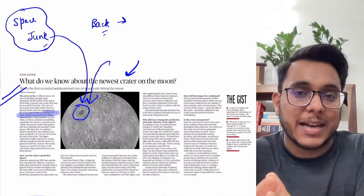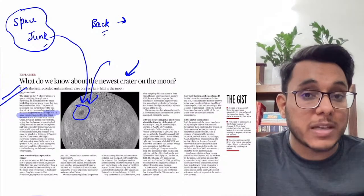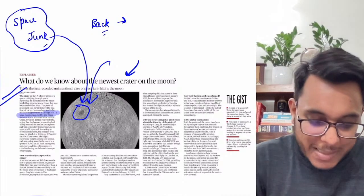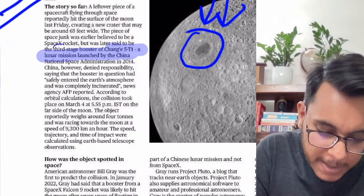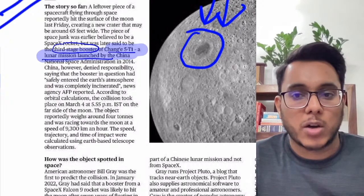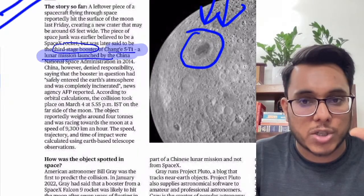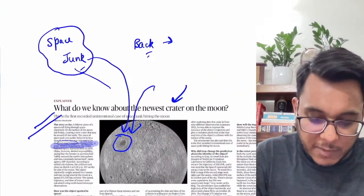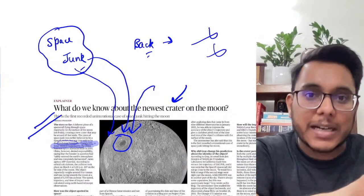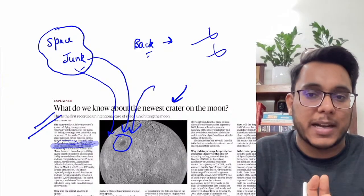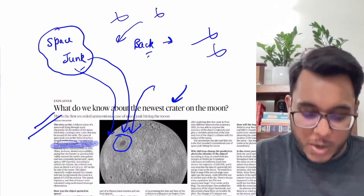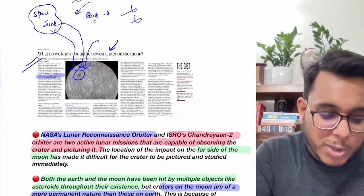This event calls into action the growing threat posed by space junk. The space junk is identified as the third-stage booster rocket of China's Chang'e 5 T1 lunar mission. China has denied this, saying their rocket entered Earth's atmosphere and was completely incinerated. However, it is being claimed that it is part of China's mission. This is the first time a piece of space junk has unintentionally created a crater on the moon.